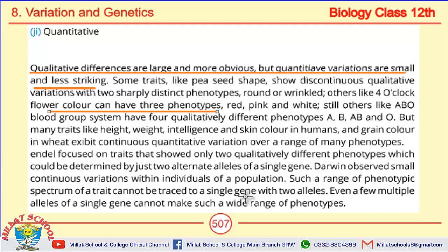For example, four o'clock flower color shows three phenotypes: red, pink, or white. In the ABO blood group system, a person is either group A, B, AB, or O. These are qualitative and discontinuous. For quantitative variations, skin color in humans ranges from light to dark in a continuous spectrum. Intelligence also varies continuously. So these are continuous and quantitative traits.